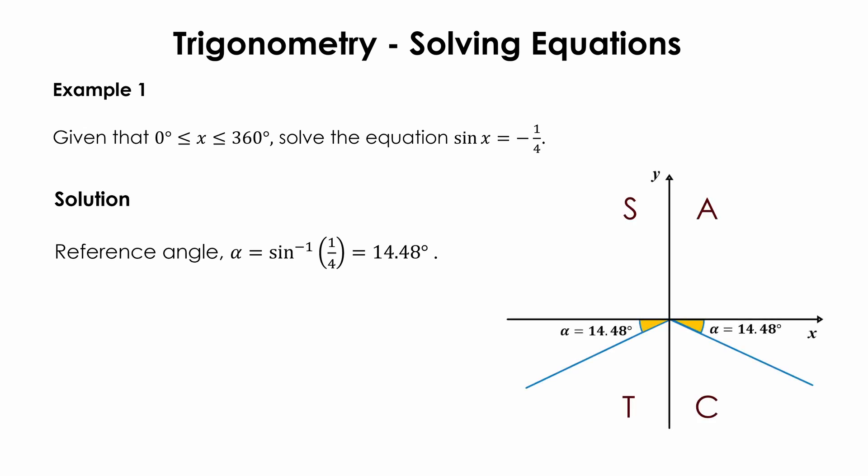Next, determine the quadrants in which x will lie. As sine x is negative, using the ASTC rule, x will lie in the third or fourth quadrant. Recall that sine is positive in quadrants 1 and 2, and is negative in quadrants 3 and 4.